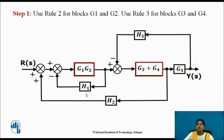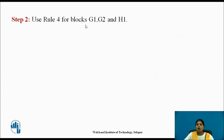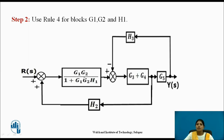H1 is in feedback with the G1·G2 block. So use rule 4 for blocks G1, G2, and H1. After solving, we get G1·G2 divided by 1 plus G1 into G2 into H1.